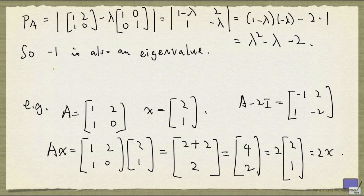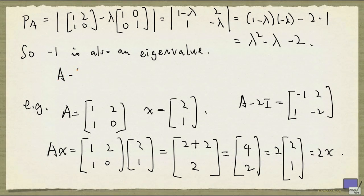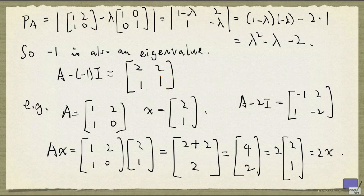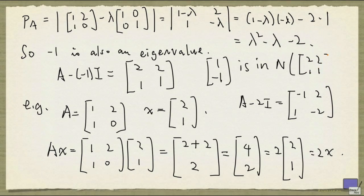And what would be an eigenvector with this eigenvalue? Well, all you need to do is look at this matrix A minus (-1)I and find a non-zero vector in its null space. So this matrix is [[2,2],[1,1]]. And it's not hard to see that if you take the vector [1,-1], this is in the null space of this matrix. So [1,-1] is an eigenvector of A with eigenvalue of minus 1.